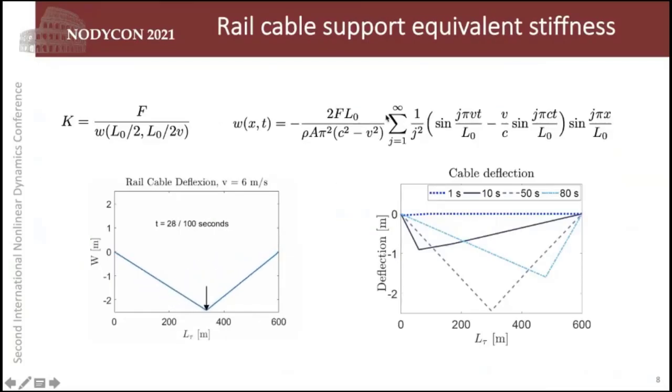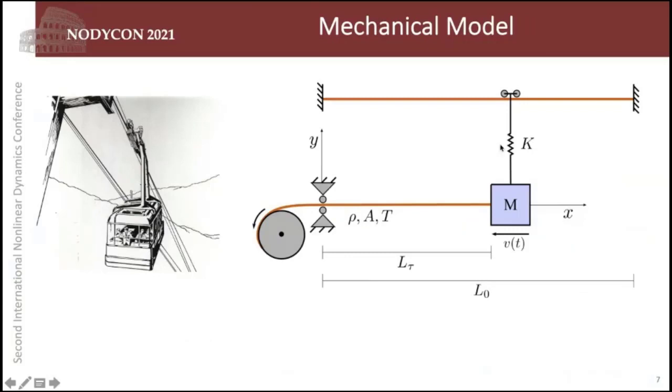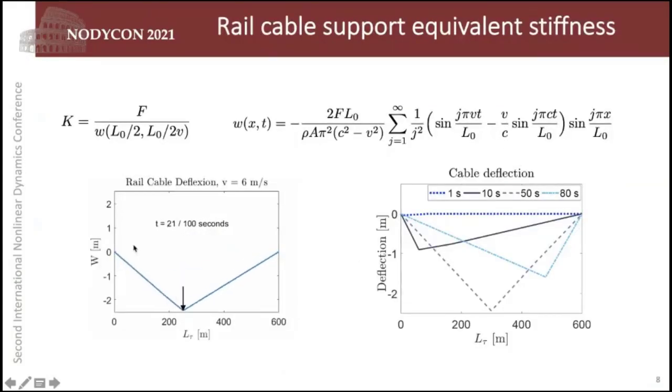First, we need to define the stiffness of this support. For this, we use this approximation here. We consider the load, the weight of the car, as a moving force translating along this cable. And we divide this force by the displacement in the middle of this path. This is a classical system which is well understood in the literature. So we have an analytical formula for the displacement of the cable in this situation. We use this classical approximation to compute this displacement and the ratio gives an estimation of the stiffness.